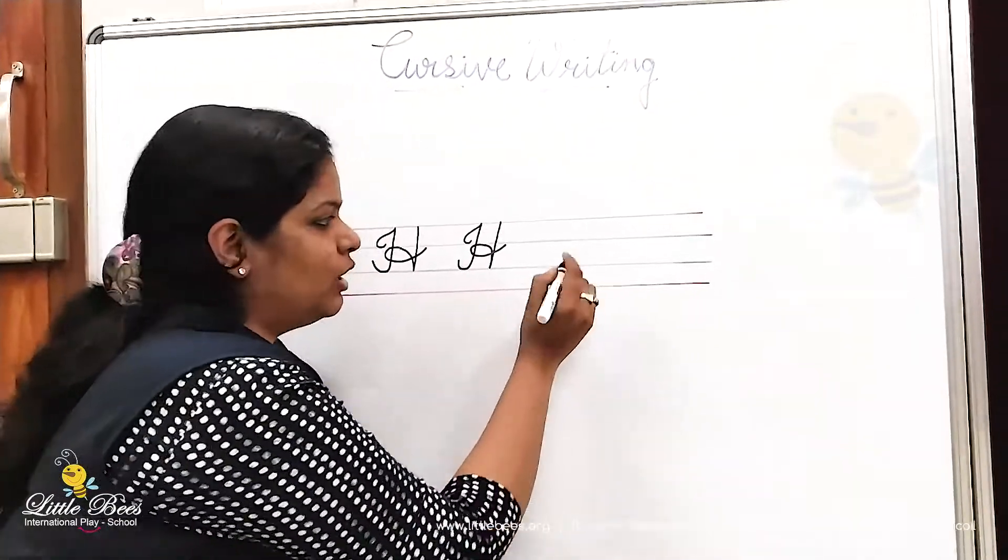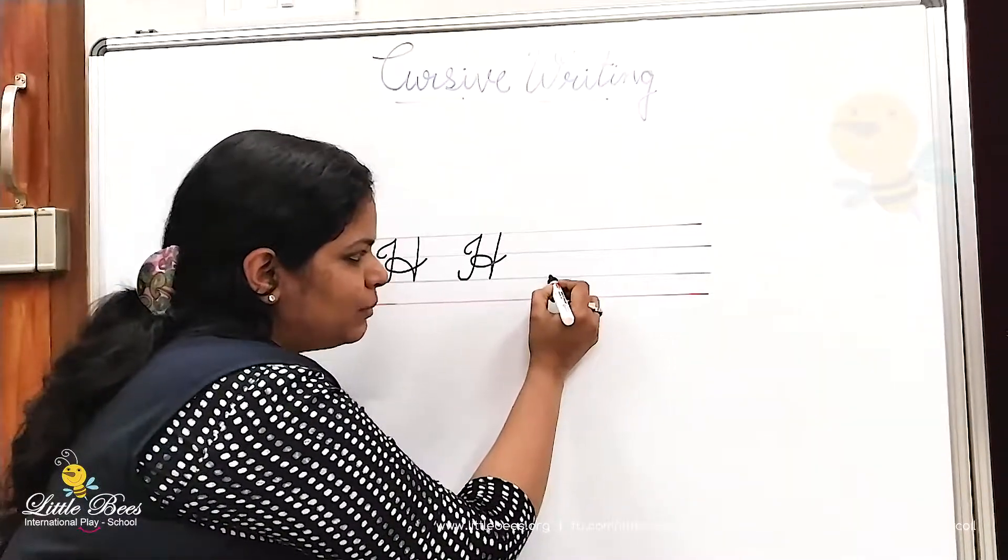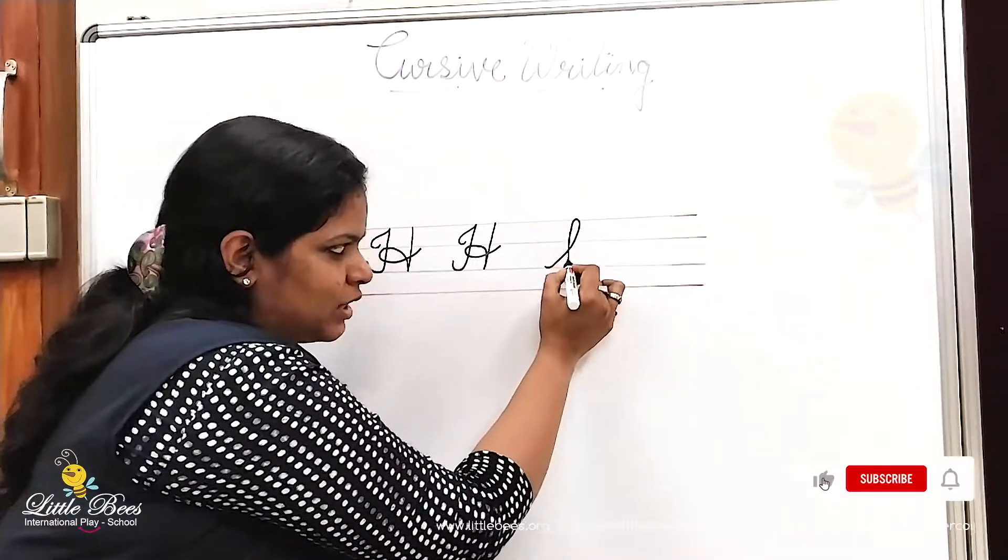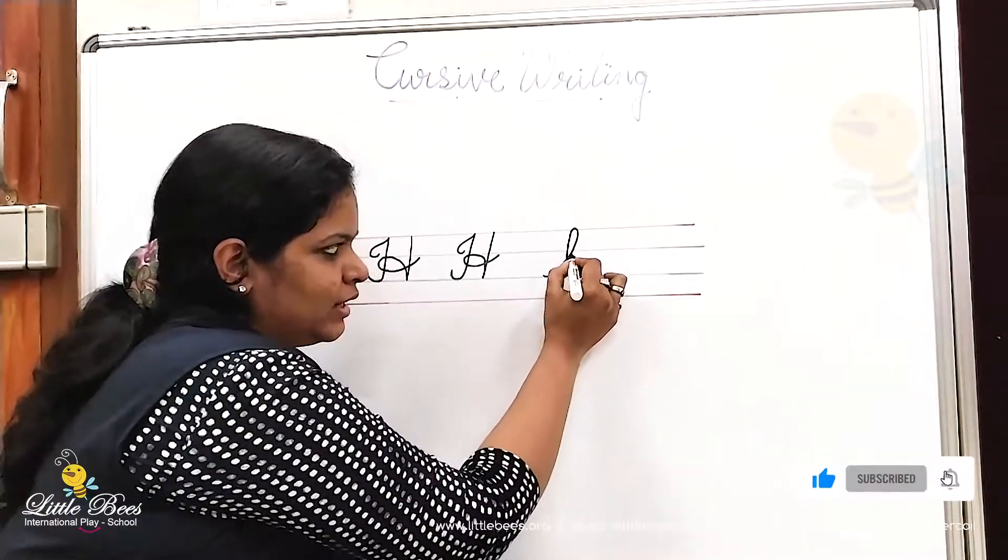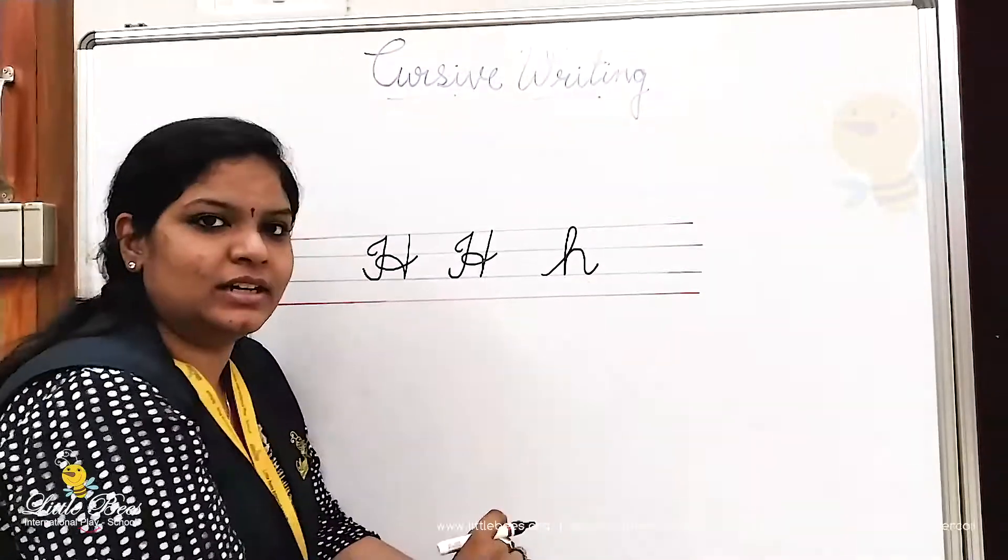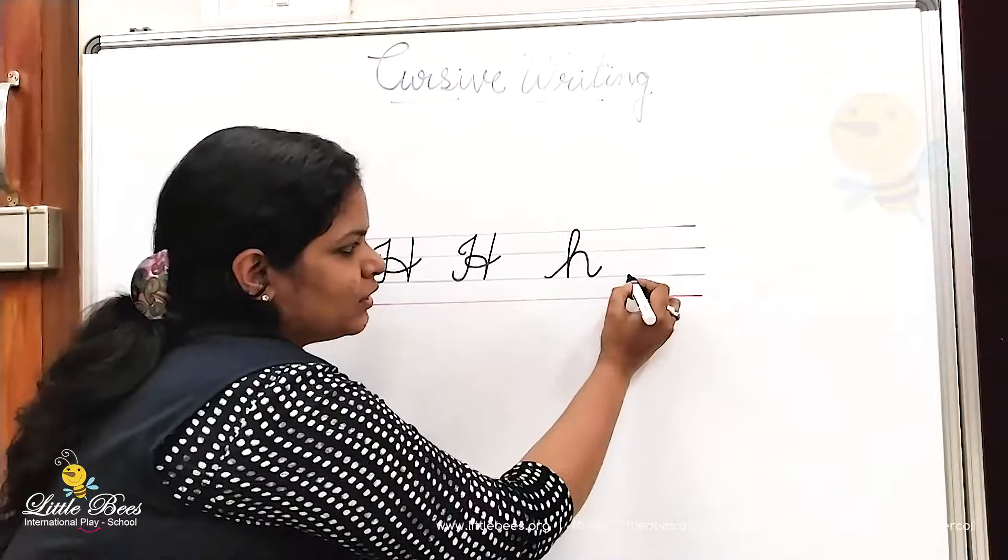From the second blue line you will go up to the red line, come down to the blue line, and you write h like this with a small curve. Got it?